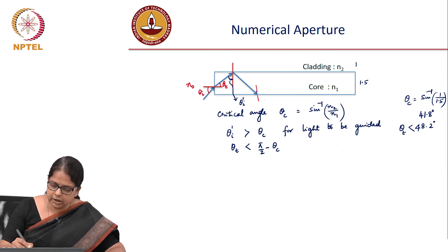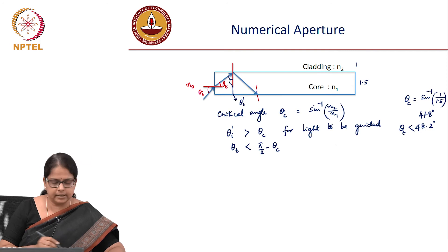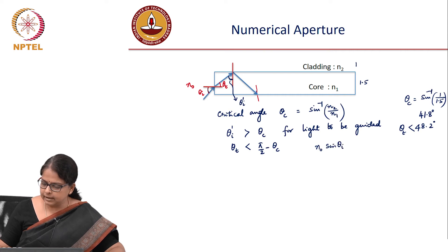As far as the launching angle is concerned, what is the relation between sin θᵢ and sin θₜ? We know that n₀ sin θᵢ equals n₁ sin θₜ, writing Snell's law at the air-core interface.